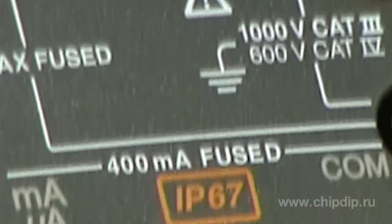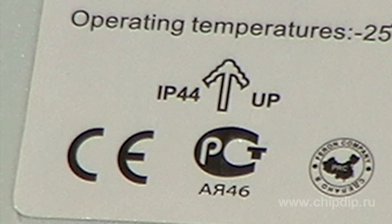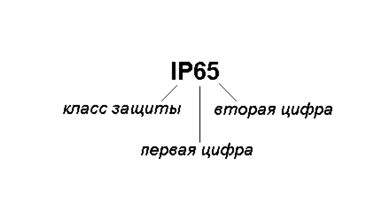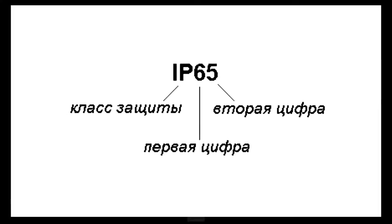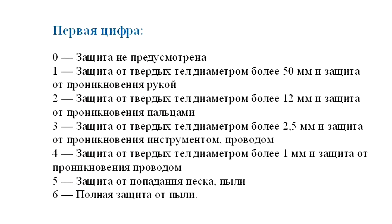These requirements are specified in the standard DIN EN 6529, which applies to all countries in Europe and Asia. Protection class, or IP class, is encoded by two compulsory digits, but in some cases there are additional letter marks. The first digit indicates the degree of IP protection against dust.